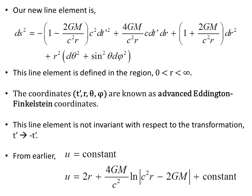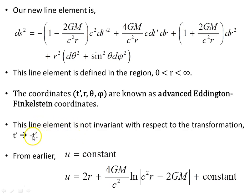Our new line element is continuous in the region r greater than zero, less than infinity. We have removed the coordinate singularity at the Schwarzschild radius that the Schwarzschild metric had. This new metric is expressed in the advanced Eddington-Finkelstein coordinates t-prime, r, theta, and phi. One thing to notice is that this line element is not invariant with respect to the time reversal transformation t-prime replaced with minus t-prime — it is not time-reversal invariant.